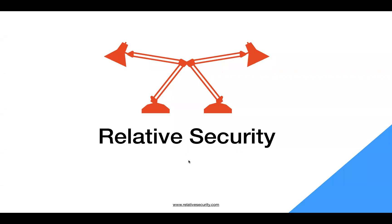Welcome back to another video of Relative Security. Today we are going to talk about three more terminologies: SIEM, SOAR, and XDR. In the last video we talked about different terminologies related to antivirus, EPP, and EDR, but today we are going to talk about SIEM, SOAR, and XDR. So let's start.